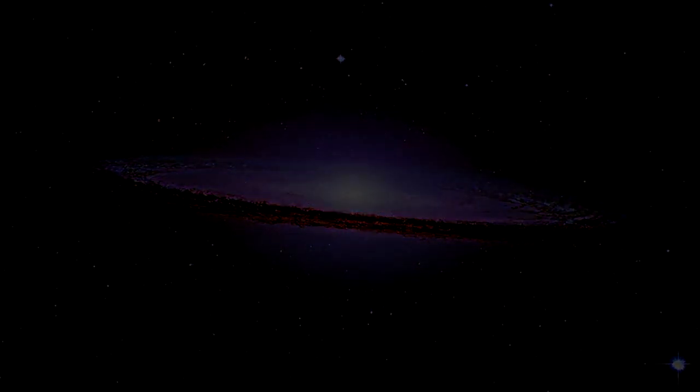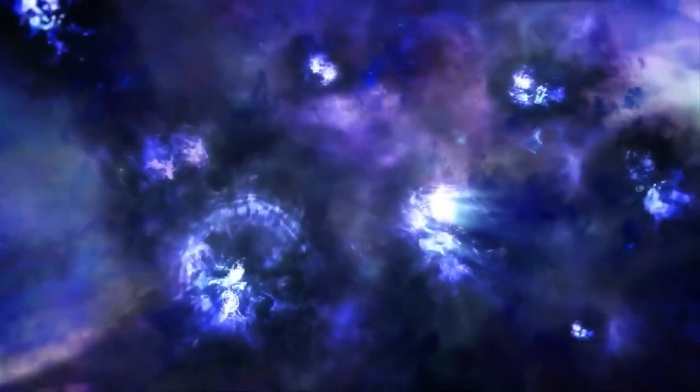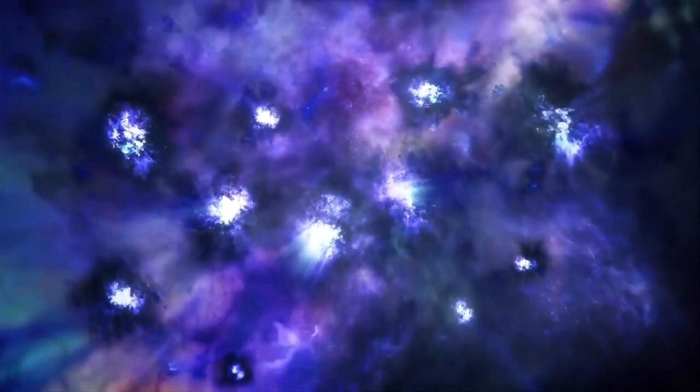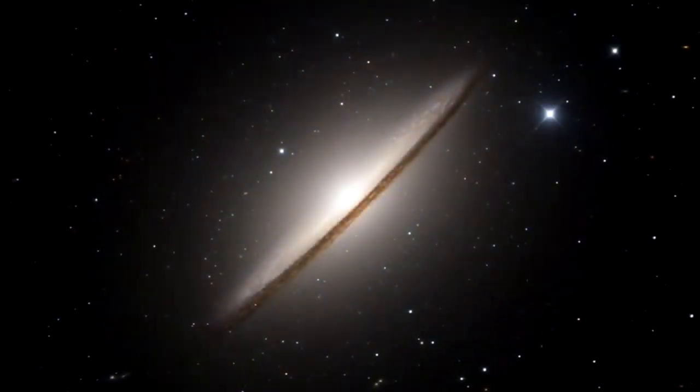It is located in the constellation of Virgo. The Sombrero Galaxy, also known as M104, was first observed by astronomers in the 18th century.